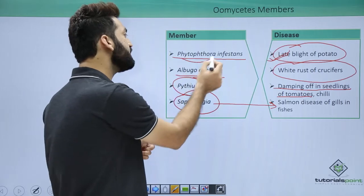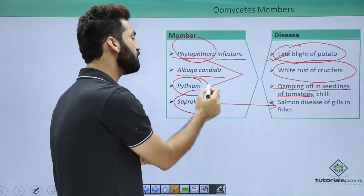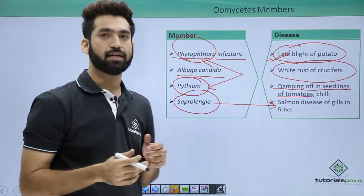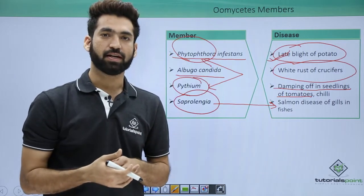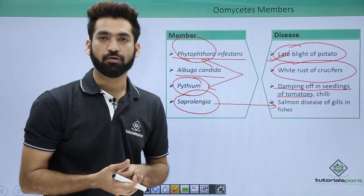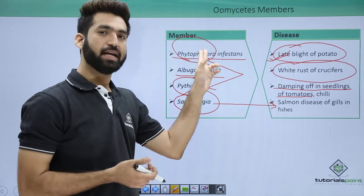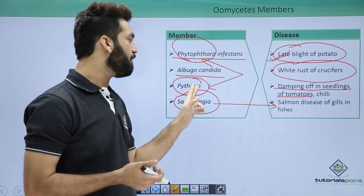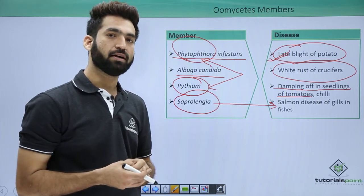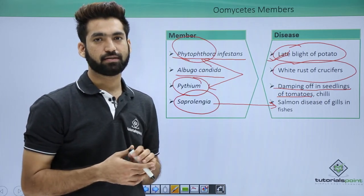Remember these two names which are very important: Pythium and Phytophthora — both are asked in exams about which fungus member will have a cellulosic cell wall. The answer would be an oomycetes member, and most of the time the examples given are Phytophthora or Pythium. Next class I'll be talking about the description of zygomycetes.